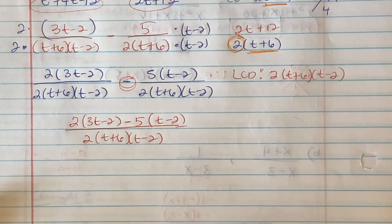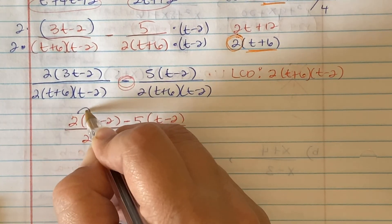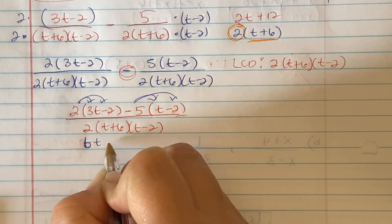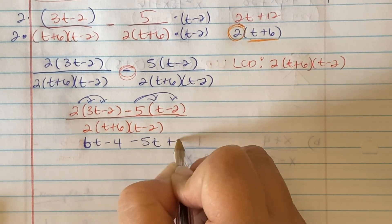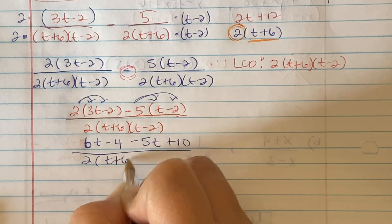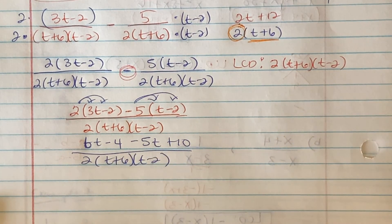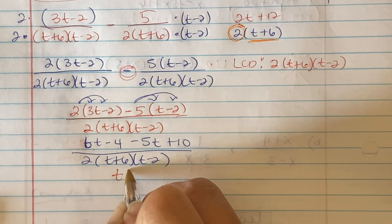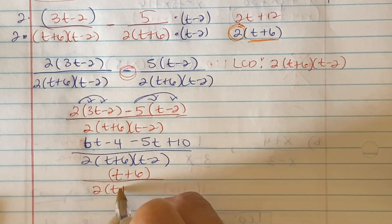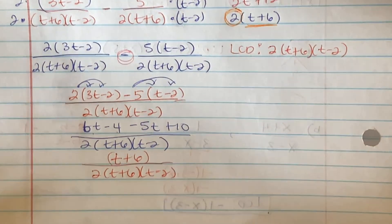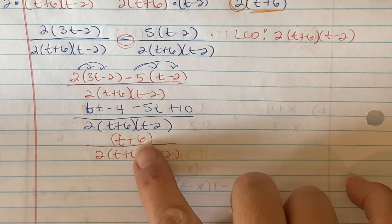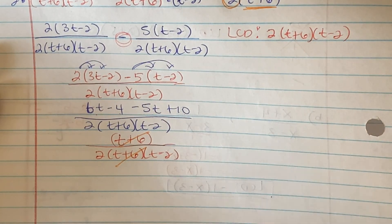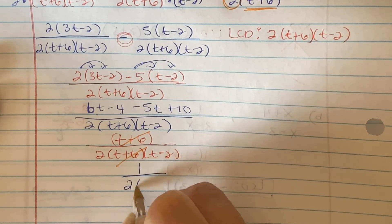We simplify the numerator by distributing: 6T minus 4 minus 5T plus 10 over 2(T+6)(T-2). Combining like terms: 6T minus 5T gives T, and -4 plus 10 gives 6, so the numerator is T plus 6. Then we apply the rules from 5.2 — cancel like terms. The (T+6) in the numerator cancels with (T+6) in the denominator, leaving 1 over 2(T-2) as the final answer.